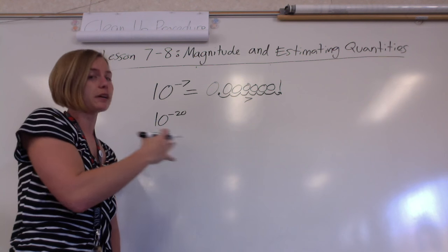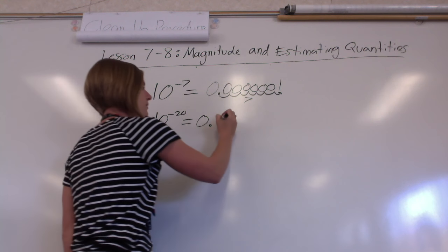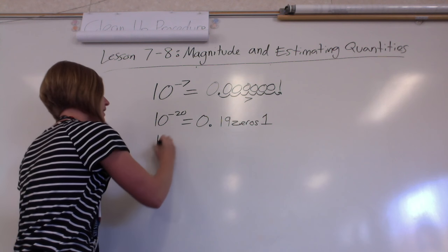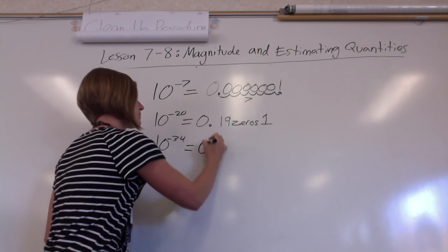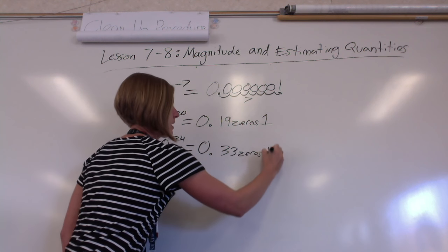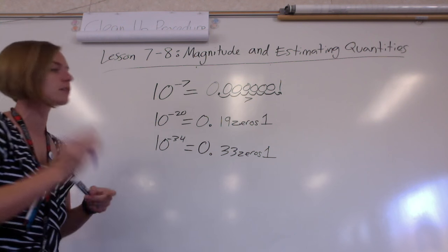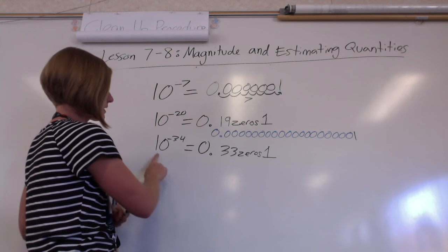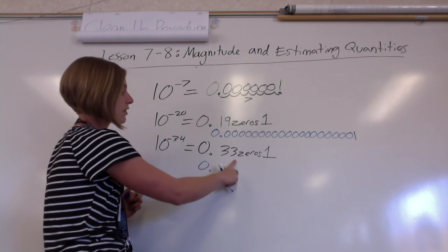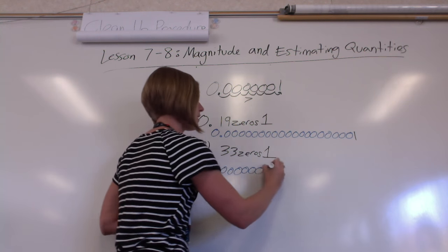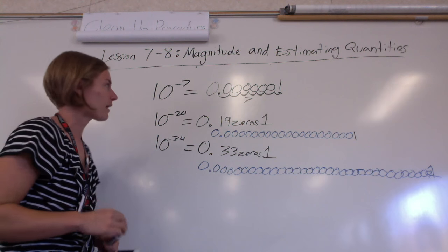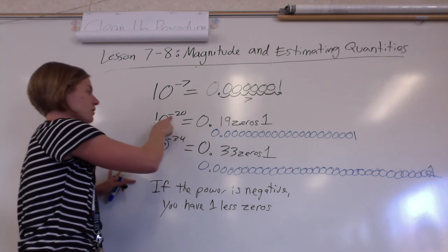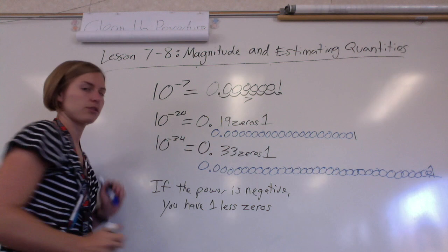10 to a negative 20 means we're going to have nineteen zeros and then a one. You can write that out if this doesn't really make that much sense to you. If I had 10 to a negative 34, it's going to be zero point thirty-three zeros and then a one. So the pattern is: seven became six zeros, twenty became nineteen zeros, and thirty-four became thirty-three zeros.